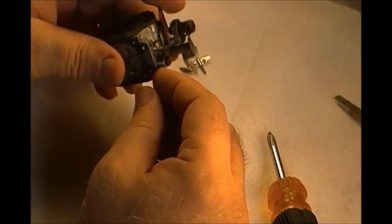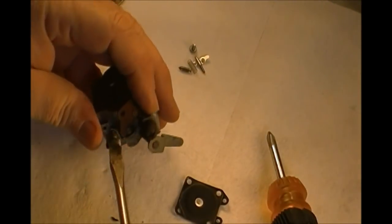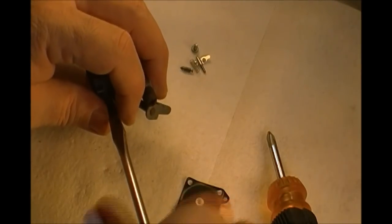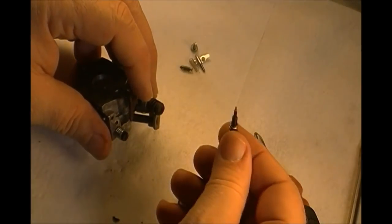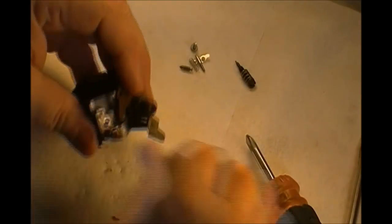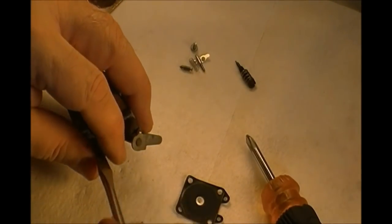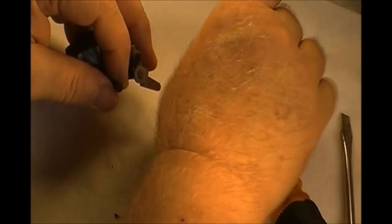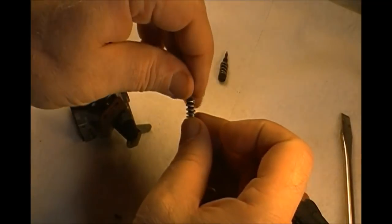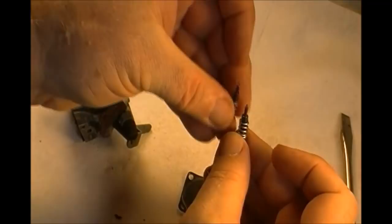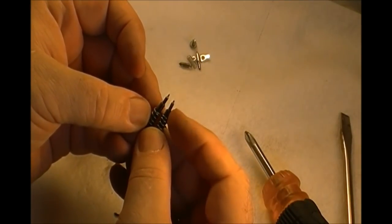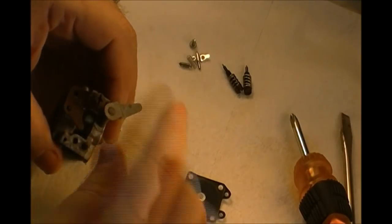Now I'm going to pull these adjusting valves off because we're going to give this thing another bath in the ultrasonic parts cleaner. You can't get them wrong - one of them has got a thicker, wider body than the other. One hole is bigger than the other, so you don't have to worry about getting them mixed up.